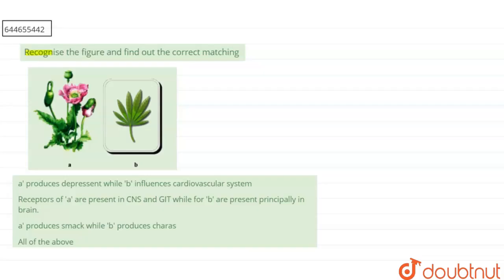Recognize the figure and find out the correct matching. Option one: A produces a depressant while B influences the cardiovascular system. Option two: receptors of A are present in CNS and GIT while receptors of B are present principally in brain. Option three: A produces smack while B produces hashish. Option four: all of the above.